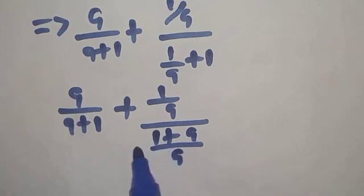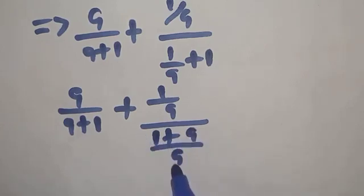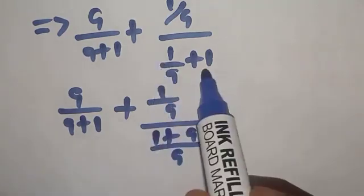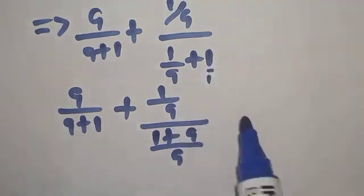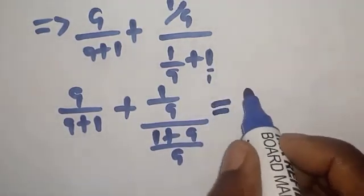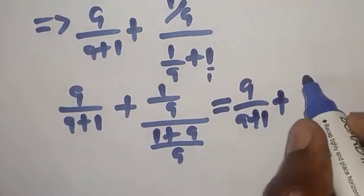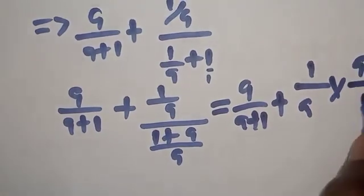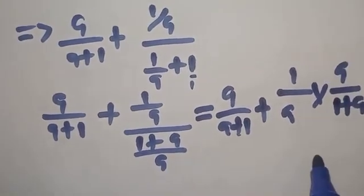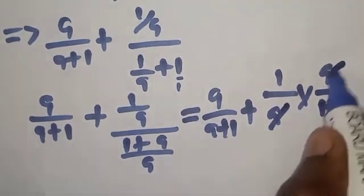Then this can be written by finding the LCM we get this value that is a over a plus 1 plus 1 over a all over the LCM is a. Then a goes in a is 1, 1 times 1 is 1 plus 1, this is over 1, 1 goes in a is a, a times 1 is a. This can be written as we have a over a plus 1 plus 1 over a times a, 1 over 1 plus a.